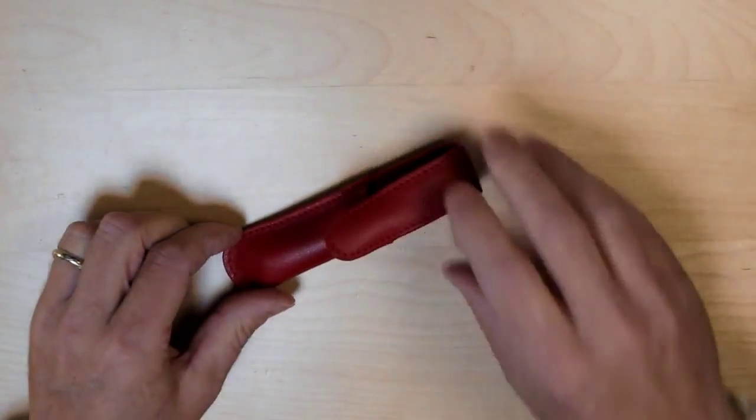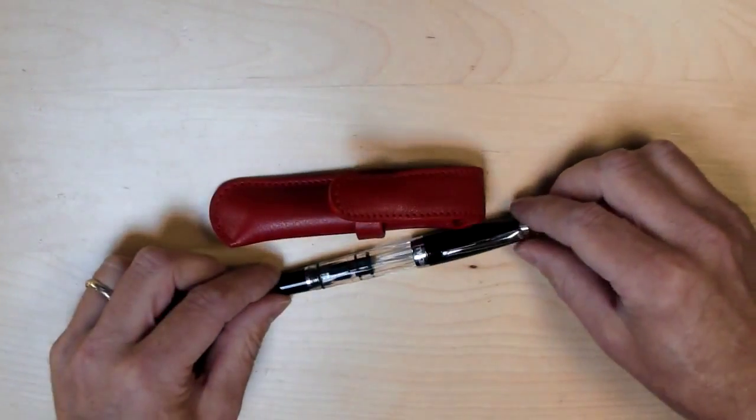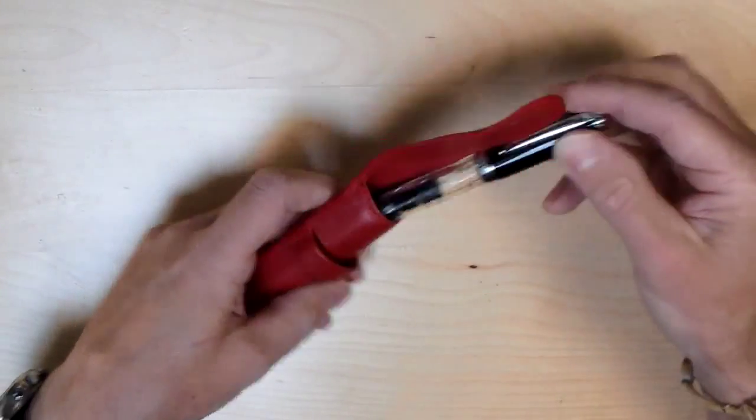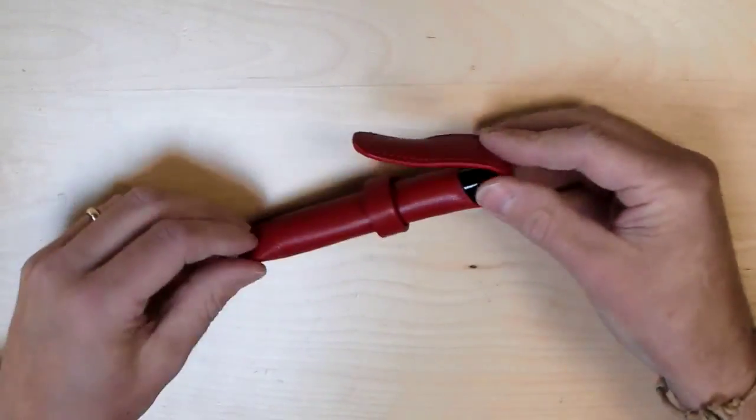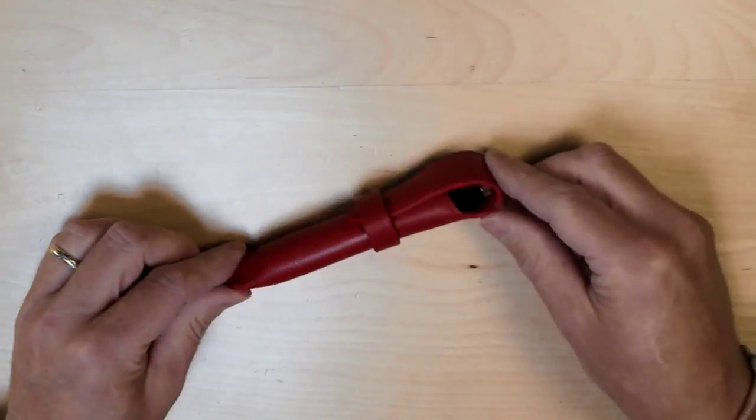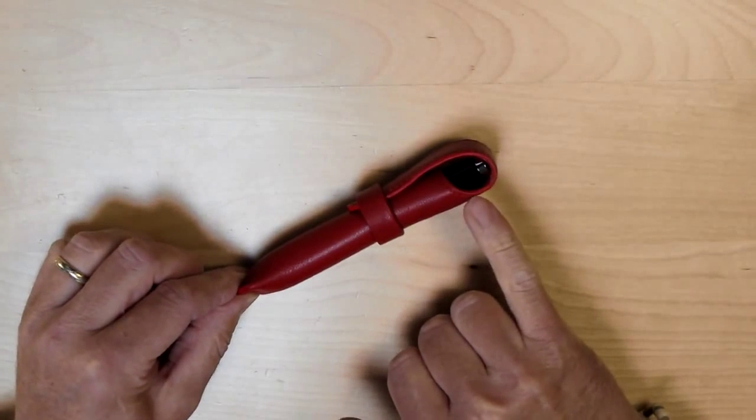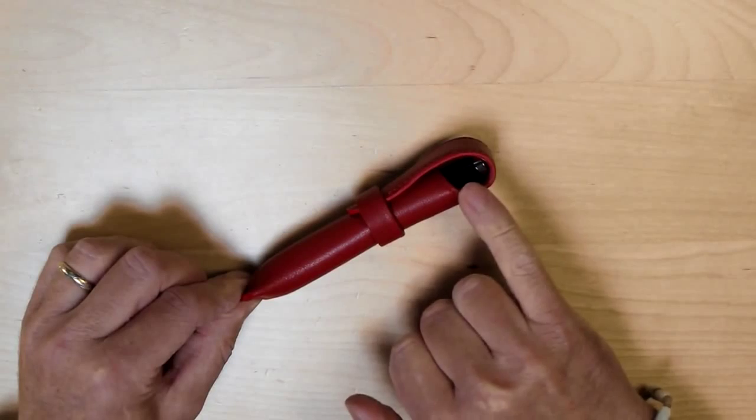And finally today, pushing the capabilities of this case, the TWSBI Diamond Mini. Slips in nicely, but as you can see it's really on the limit of length. So when I close the pen case, the flap is only just secured, and as you can see, the cap is protruding a little bit beyond the main body of the case.